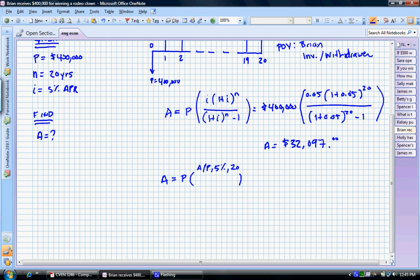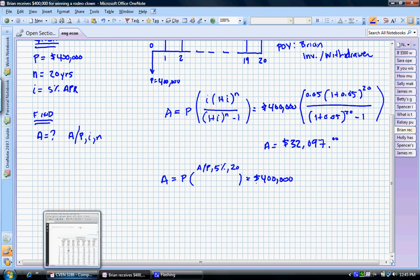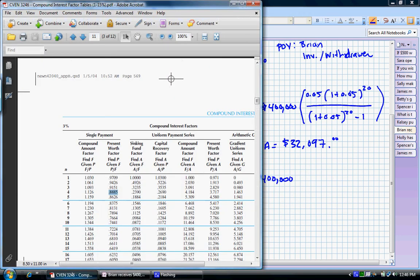Remember, in order to find out what factor we need to do, all we have to do is say, what do we need to know? A. What are we given? P, i, and n. And that way we know we're using the right factor here. So we're going to multiply the $400,000 by this factor, A/P, at 5% to the 20. So let's go to the 5% table.